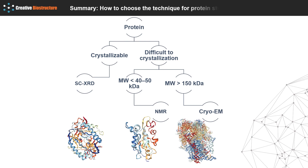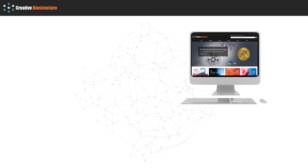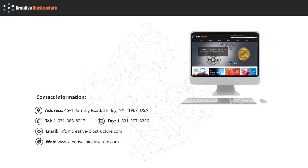In summary, each technology has its own advantages in certain applications, such that one method might be used extensively in some cases but rarely in others. Understanding the nature of the analysis is the key in method selection—inappropriate selection may produce compromised results, cause significant delays, and result in financial losses. We provide single crystal X-ray diffraction, NMR and cryo-EM services for three-dimensional protein structure determination. If you have any questions on protein structure determination, welcome to contact us for detailed information. Thanks for watching.